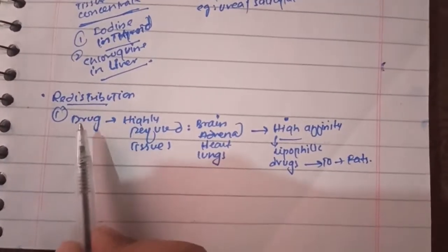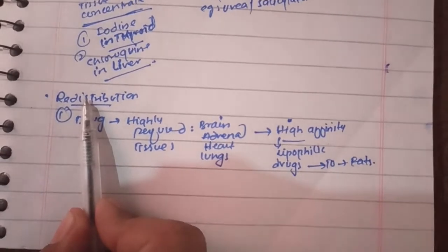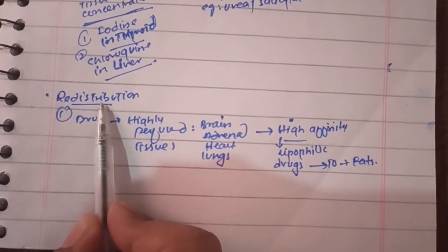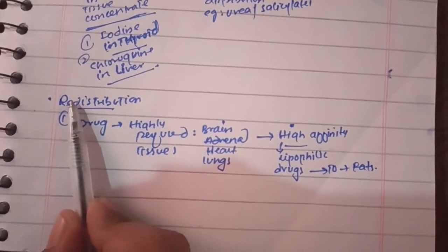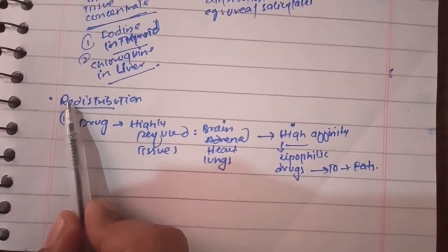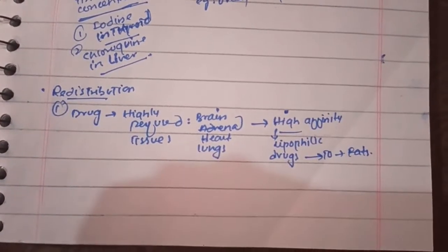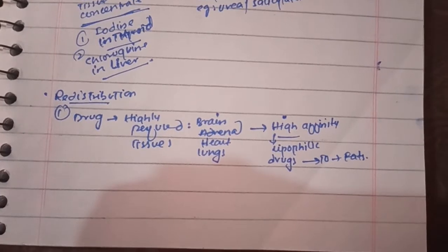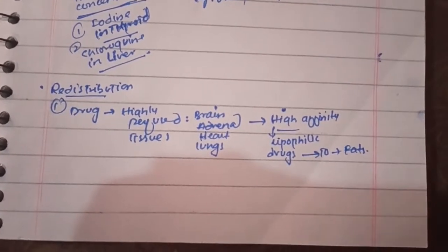Let us understand the meaning of redistribution of a drug. 'Re' means once again, and 'distribution' is simply distribution. So if distribution is done once again, this is called redistribution — or one can also say, if distribution is repeated, this is called redistribution.